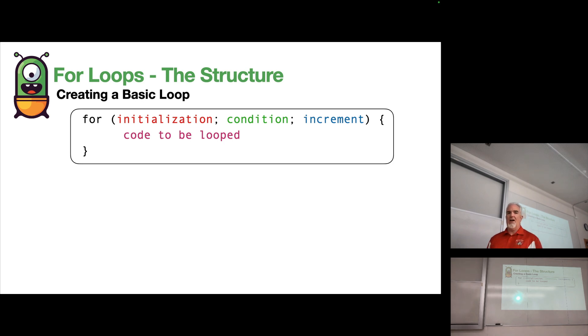You can see that the initialization and the condition have semicolons at the end of them. Inside the curly braces, we have the code to be looped, which is the code that's actually executed.